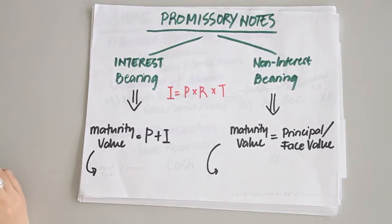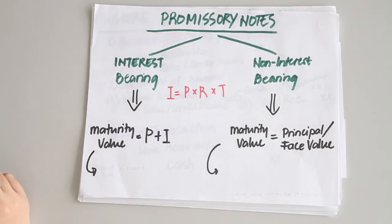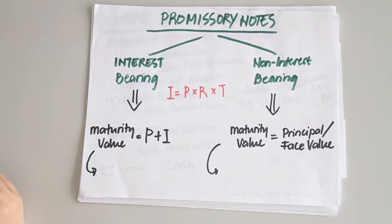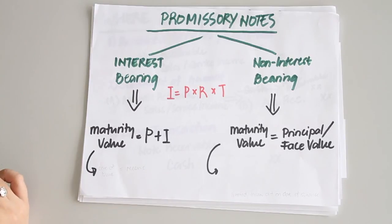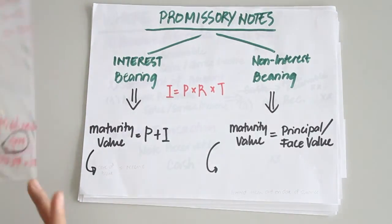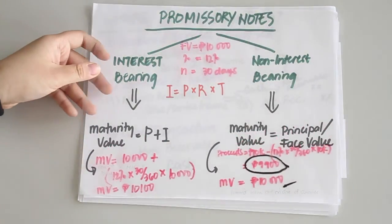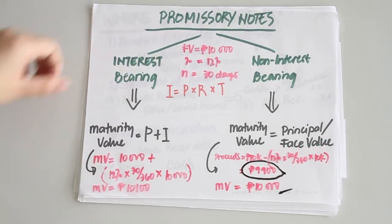For non-interest bearing notes, proceeds received on the date of issuance are net of interest, meaning the amount is less than the face value since the interest has already been deducted beforehand. Thus, on the maturity date, the amount due would simply equal the face value.